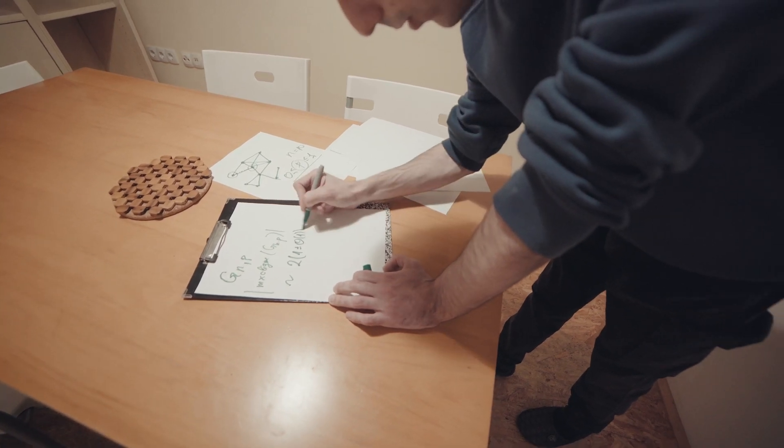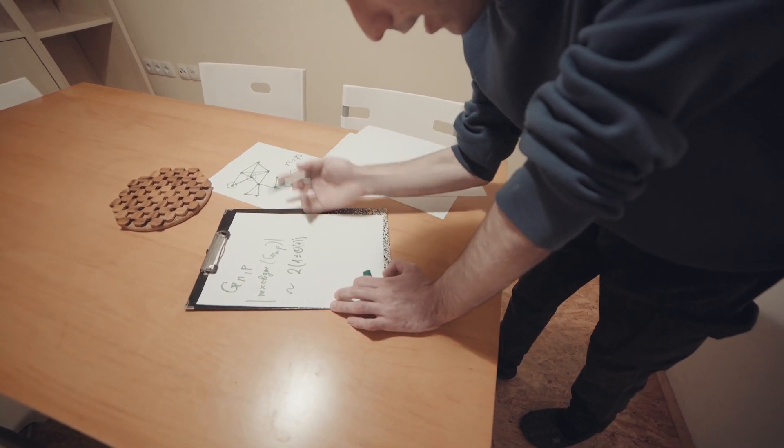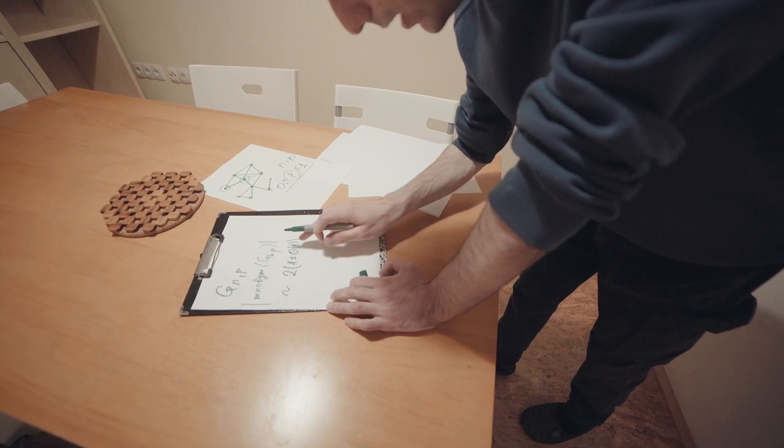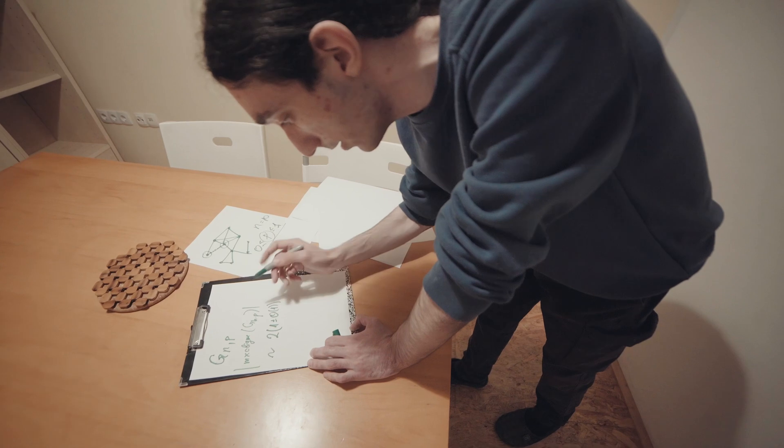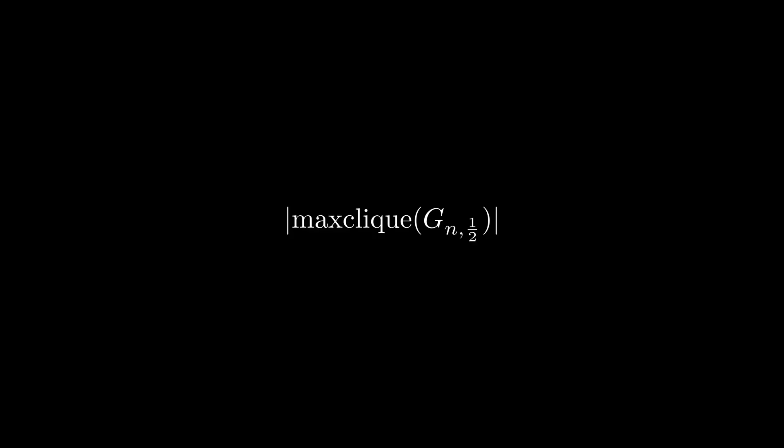We don't know what that constant is, it depends on the graph, it depends on many factors, but we can be pretty sure that this is only a constant times the log base 2 of n.